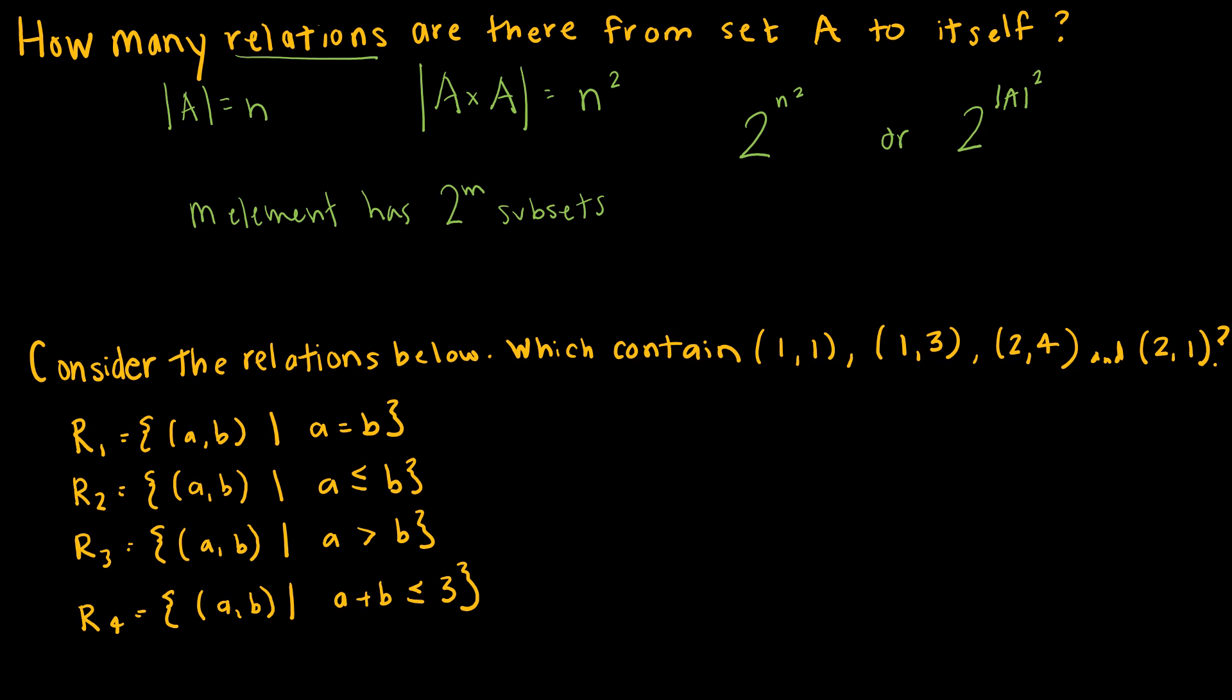Now let's look at a little more practical example. We're just asking, here's some relations 1, 2, 3, and 4. Which relations contain the ordered pairs that I have given you? So if I have a relation 1 that says A comma B, given that A equals B. So looking at my 4 ordered pairs, I can see that 1,1 would be included in that relation, but that the others would not because none of the other x and y values equal one another.